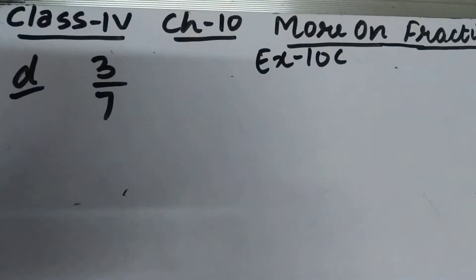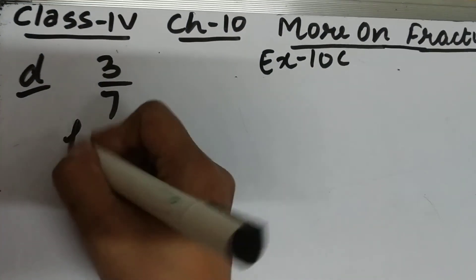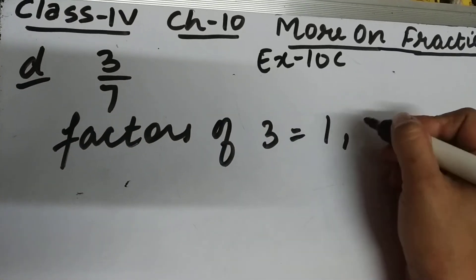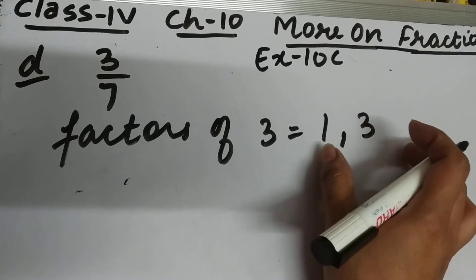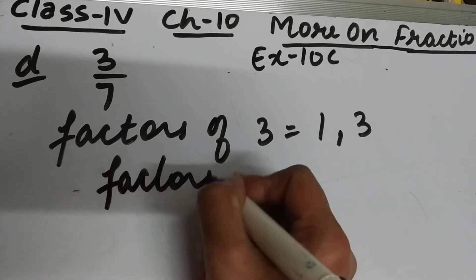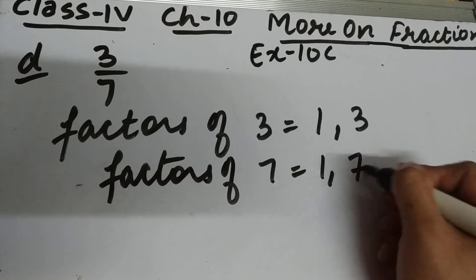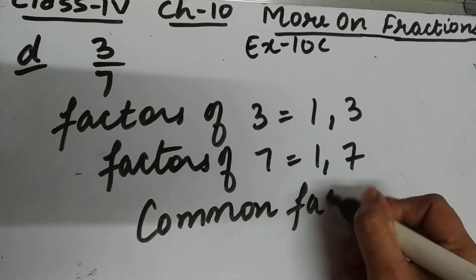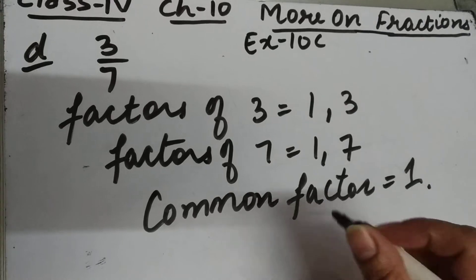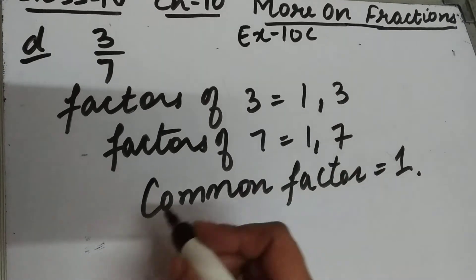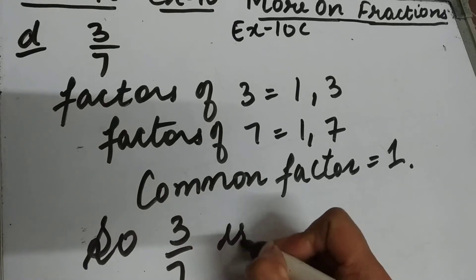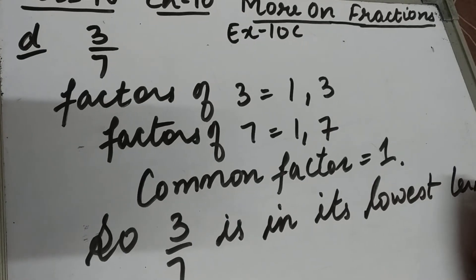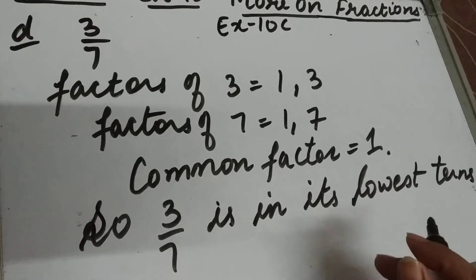Part d is 3 by 7. Factors of 3 are 1 and 3, because 3 is a prime number. Factors of 7 are 1 and 7, as 7 is also a prime number. The common factor between 3 and 7 is only 1, so 3 by 7is in its lowest terms. We cannot reduce it further.